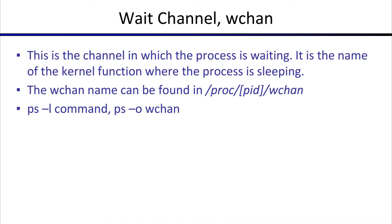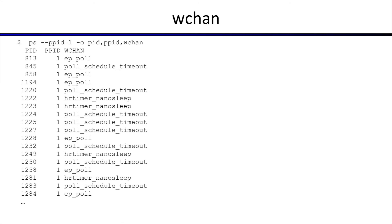You can access this by looking into /proc/[pid]/wchan — we talked about procfs and the kernel puts this information out there for you to see. You can also use command line utilities: the `ps` command with the --l flag gets you that data, and you can put the output qualifier with -o wchan to see this data.